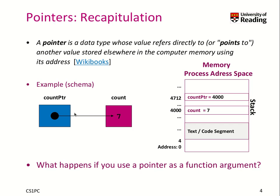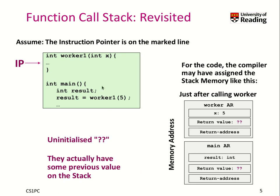The key question we will look at today is what happens if you use a pointer as a function argument. Therefore, we have to revisit how the call stack works. In this example, we assume we have an instruction pointer. It started at main and called the worker1 function with the argument 5. That means the parameter becomes the formal argument x. When the instruction pointer is here, we have to think about how the code looks in memory — how our stack frames look. First, we had our activation record or stack frame for main, where we had result of type integer, and a return value which is at this point unknown but of type integer.